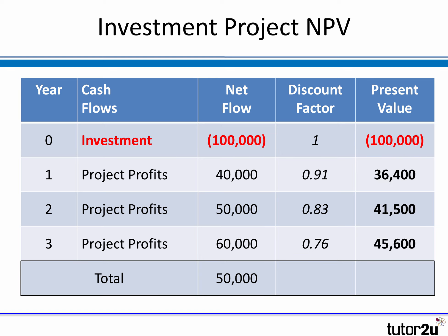At time zero there's no need to discount, so the discount factor is one — 100,000 outflow. In year one, we apply a discount factor of 0.91 to 40,000, giving a present value of 36,400. We do that for each of the next two cash flows. Adding all four figures up in the column, the net present value is 23,500 — positive. Normally, if the NPV is positive that suggests the project is worthwhile; if negative, it suggests the project is not worth pursuing.